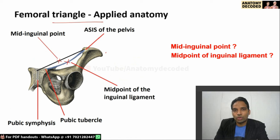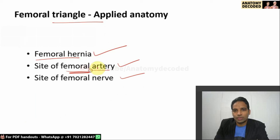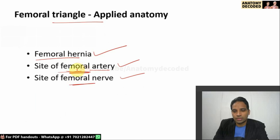The midpoint of the inguinal ligament is a different term — it refers to the midpoint between the pubic tubercle and the anterior superior iliac spine, which is slightly lateral to the femoral artery. Knowing these sites is important for femoral artery cannulation such as arterial blood gas analysis or contrast radiography, and for femoral nerve blockade for certain procedures.